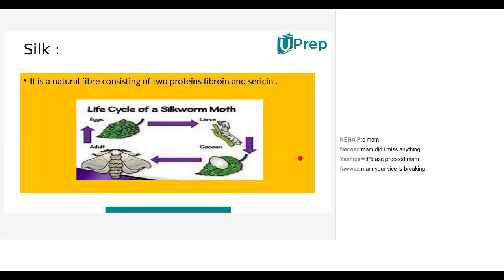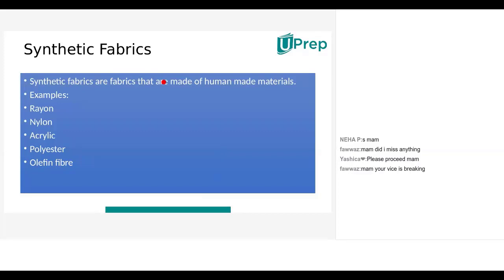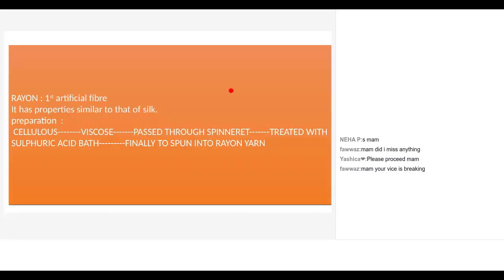Now we will discuss each one briefly. First: rayon. Rayon is also known as the first artificial fiber. Its properties are similar to those of silk. In its preparation, cellulose viscose is passed through a spinneret and treated with a sulfuric acid bath, and finally it is spun into rayon yarn.